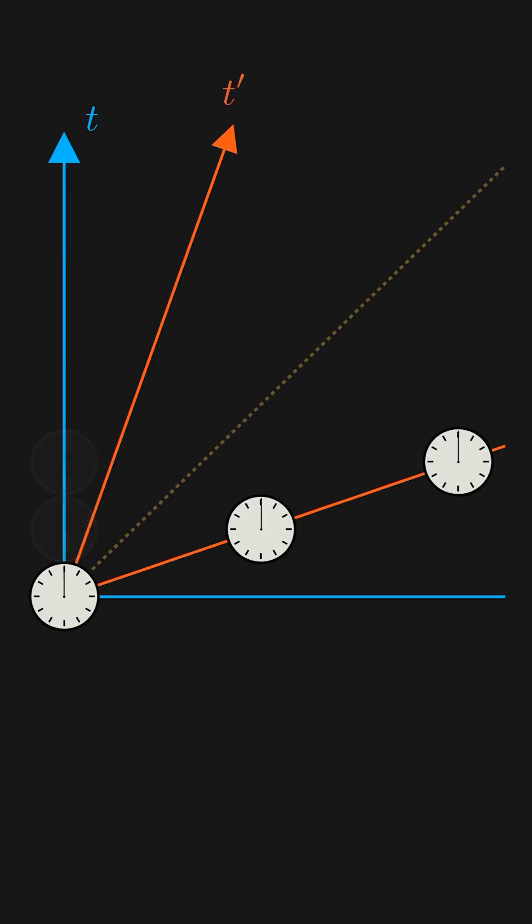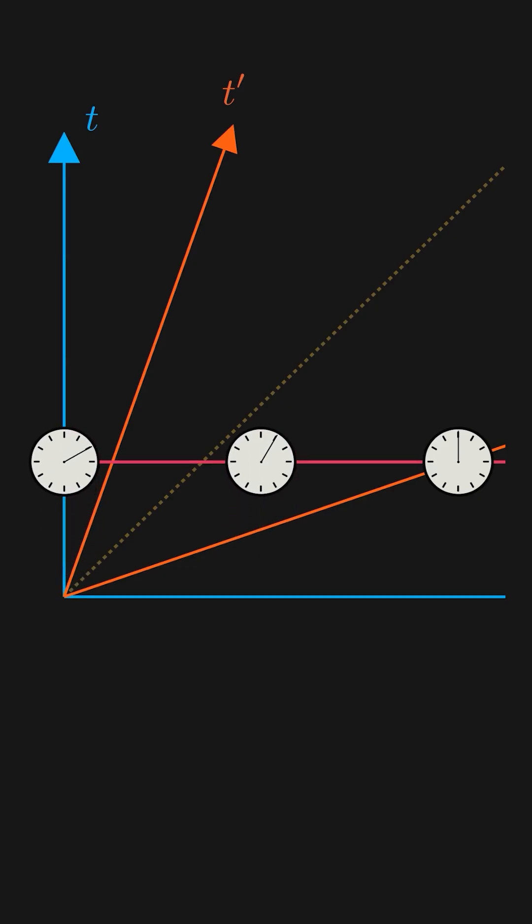If a ground observer was to measure all three of these clocks simultaneously at their same positions, they would have different delta t's the further they are from this line. So the rear clock would end up being ahead.